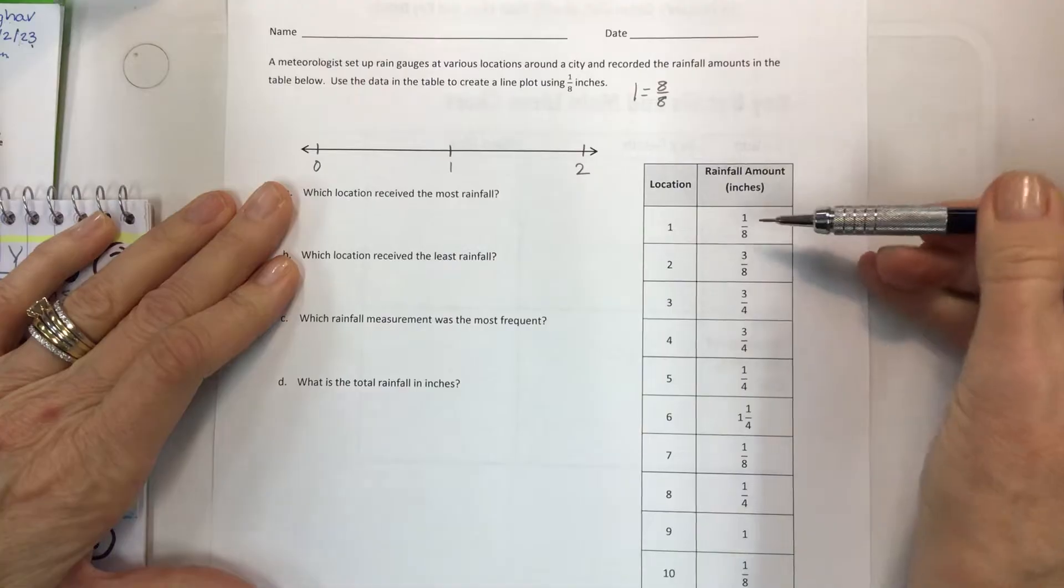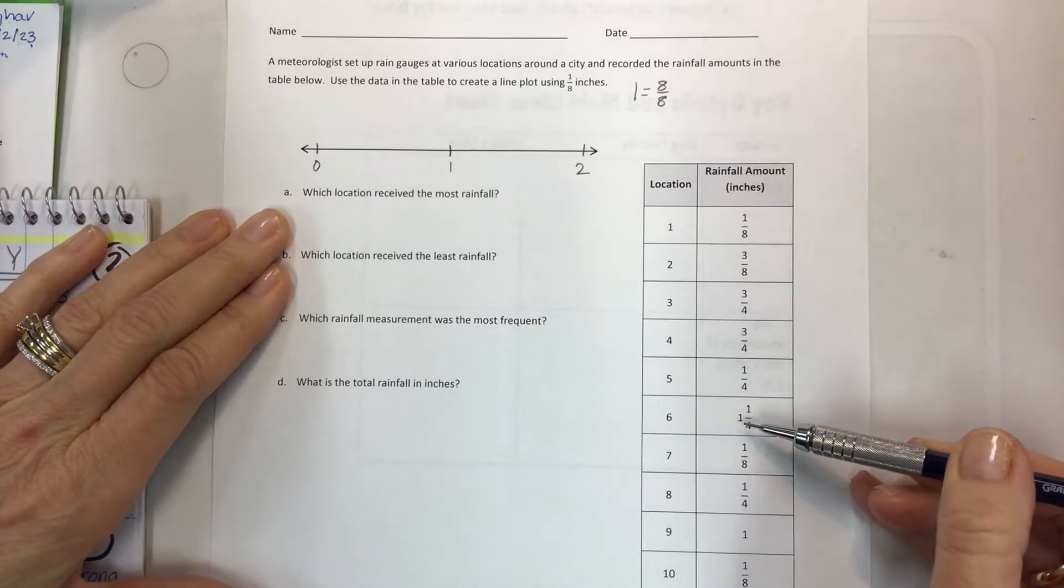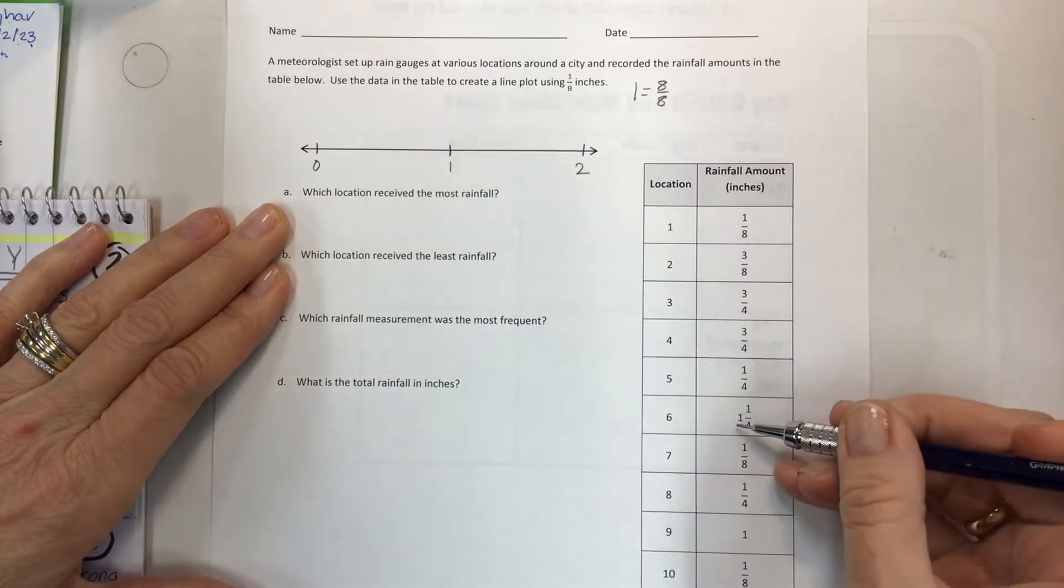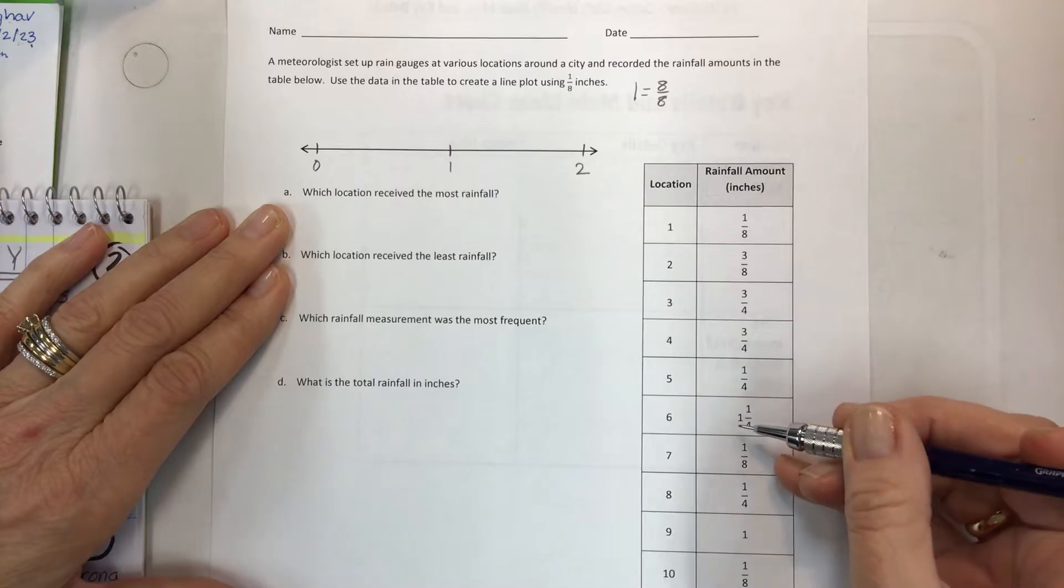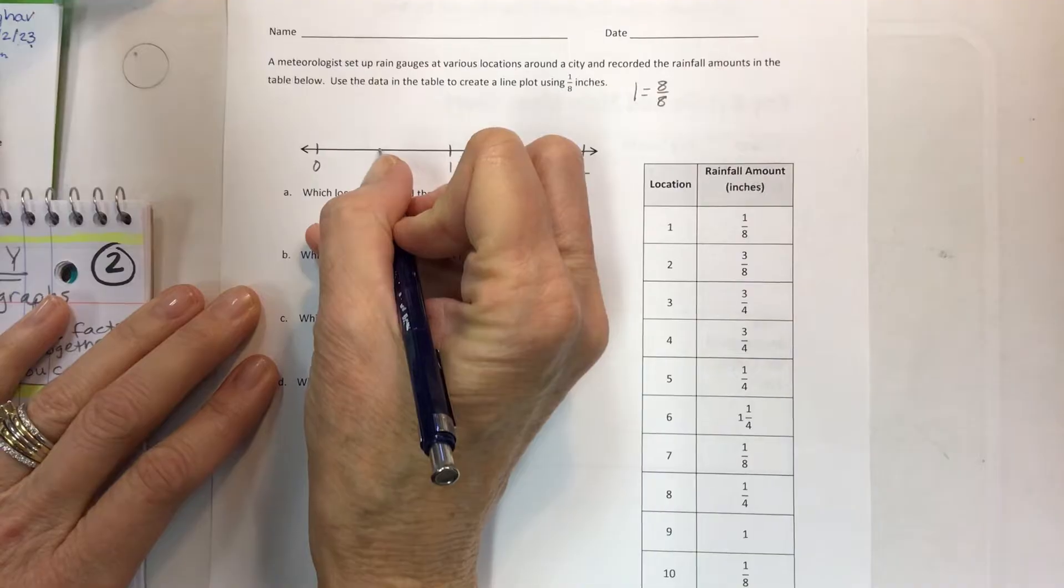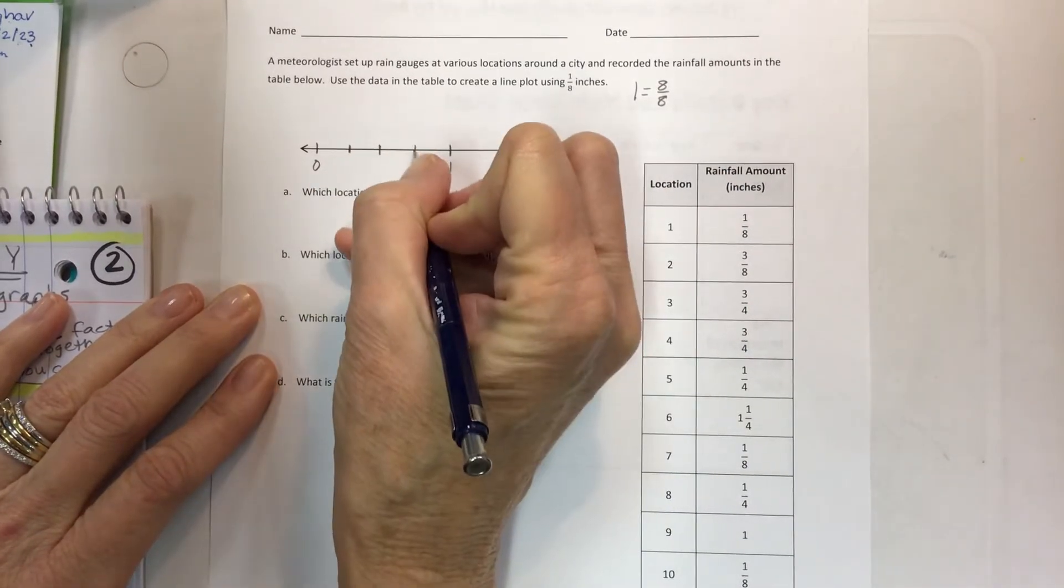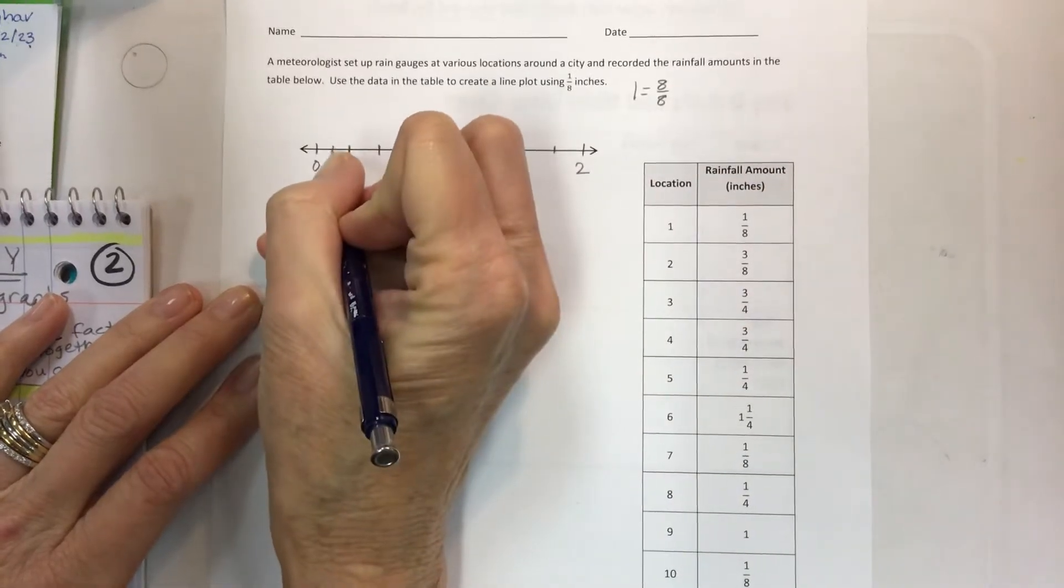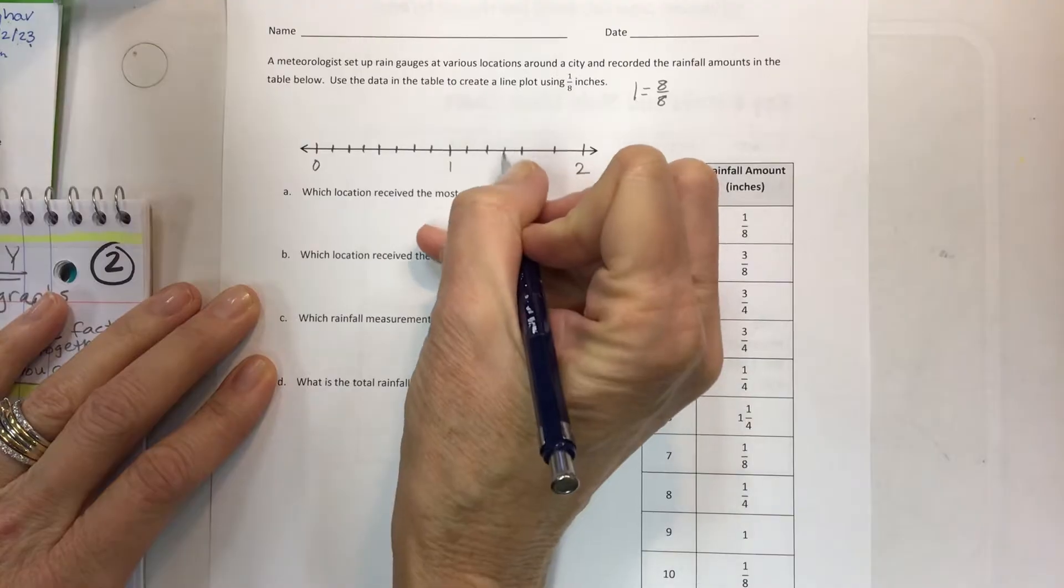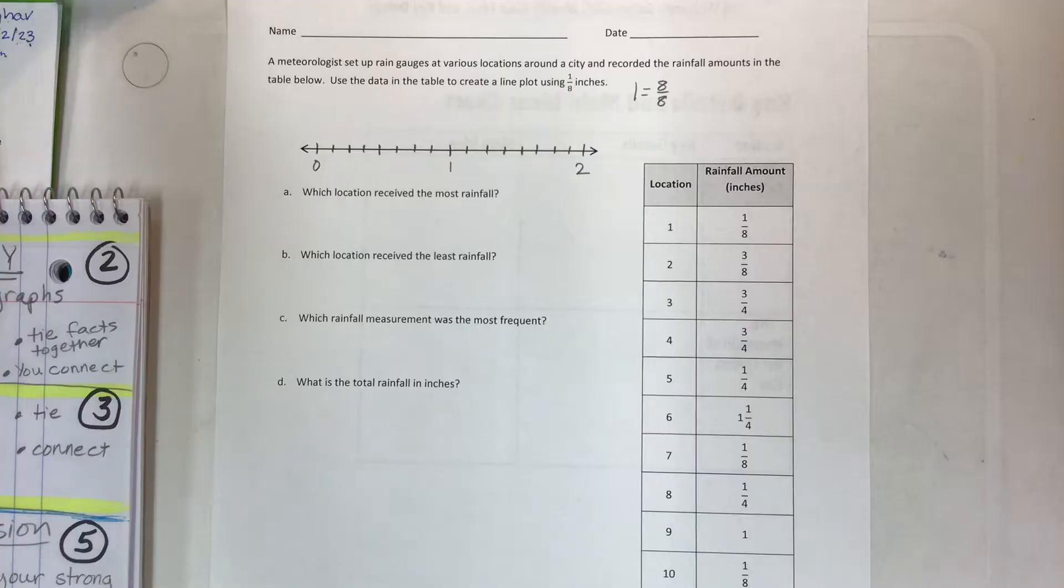Now how did I decide to do two? Because when I look at my data I see that I have a number greater than one, so I know I have to have 8 eighths over here, but I also have to have more than one. So between 1 and 2 also has to be divided into 8 pieces. So do that now if you haven't done it already. Now that you have 8 eighths for each whole, now you're going to start putting your x's on your line plot.